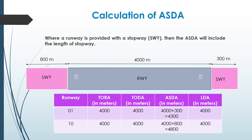Next is the calculation of ASDA. When a runway is provided with a stopway, the ASDA will include the length of the stopway as well. For runway 01, if at the end there is a stopway of 300 meters, the ASDA becomes 4000 plus 300, which is 4300 meters. For runway 10, at the end there is a stopway of 800 meters, so the ASDA for runway 10 becomes 4000 plus 800, which is 4800 meters. The other three declared distances remain the same because we do not have any clearway or displaced threshold in either runway direction.